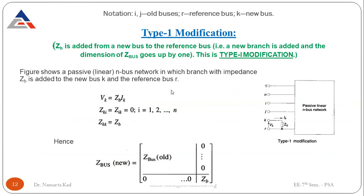Before starting with the modifications, note these notations: I and J are used for old buses, small r is used for the reference bus, and K is used for the new bus. These notations will be followed throughout all modifications.